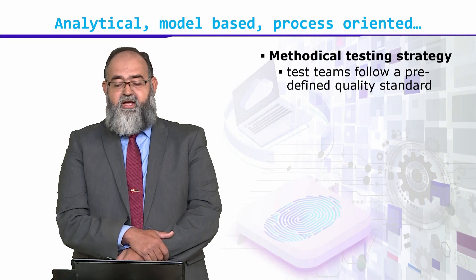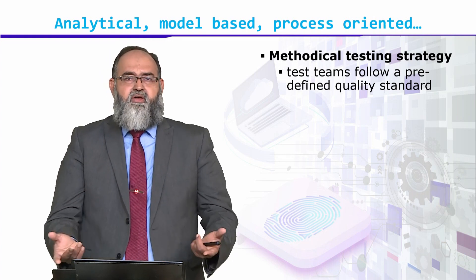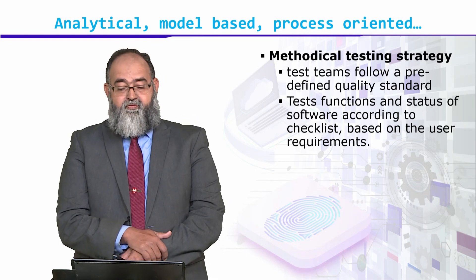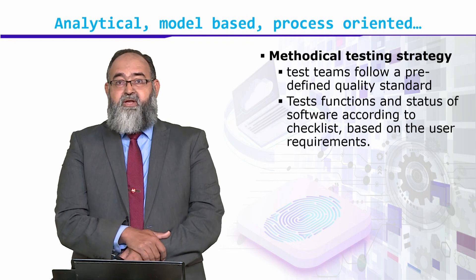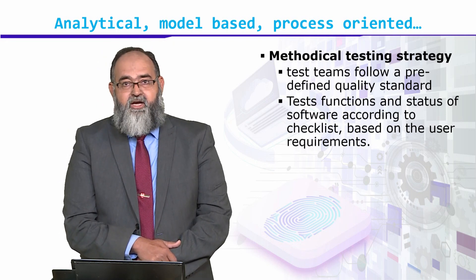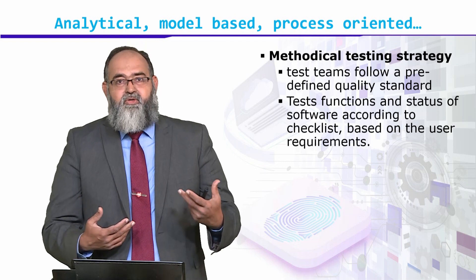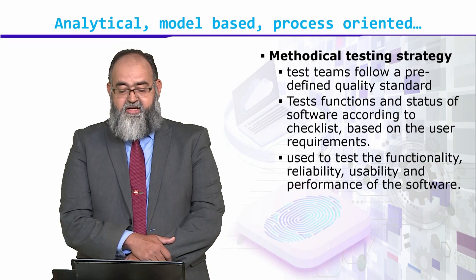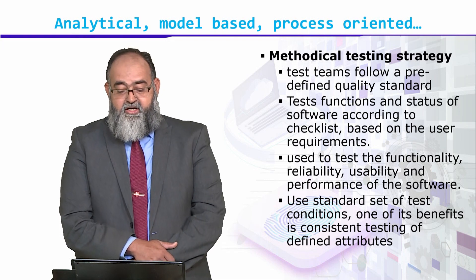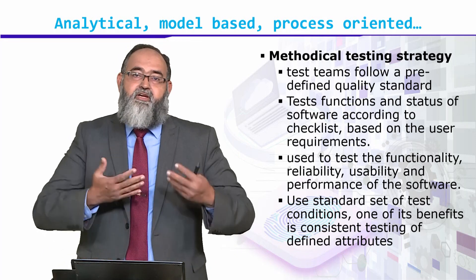Next, methodical testing strategies. Test teams follow a predefined quality standard such as BS 5700 or IEEE standard, testing functions and status of software according to checklists. Since these are standard industrial best practices, we have checklists available and we try to find out if the user requirements match those checklists. We use them to test functionality, reliability, usability, and performance using a standard set of test conditions. One of its benefits is consistency — consistent testing of defined attributes, since we are following a checklist.